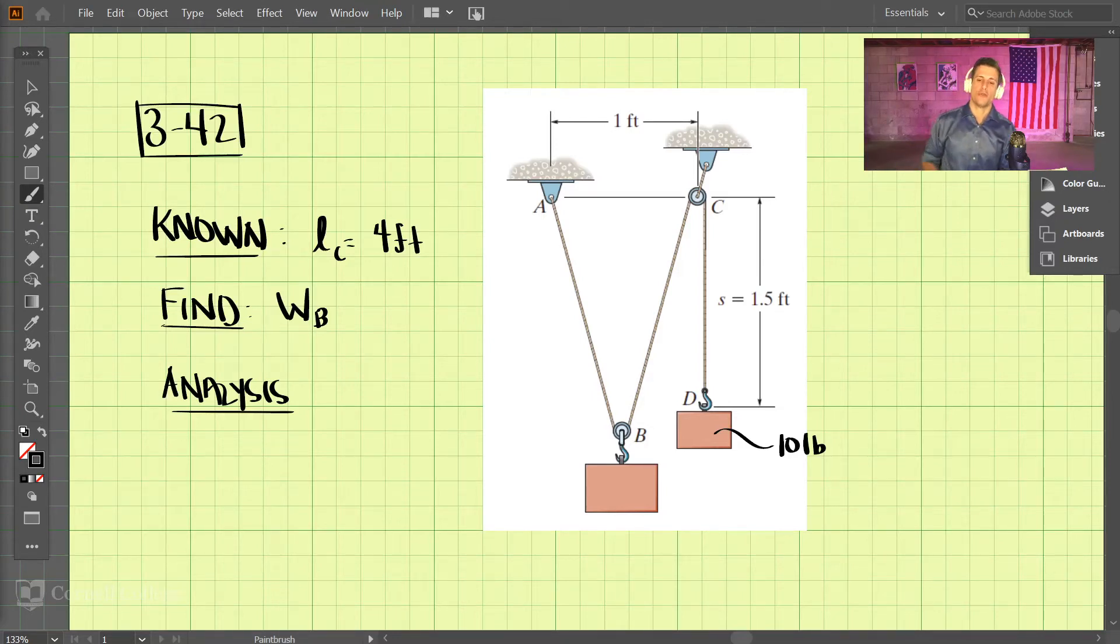Okay, so we have 342 here, and we have a setup where we know that this block of D is 10 pounds. We know that the total length of this cable or this cord is 4 feet, and we're trying to find what is the weight of B here.